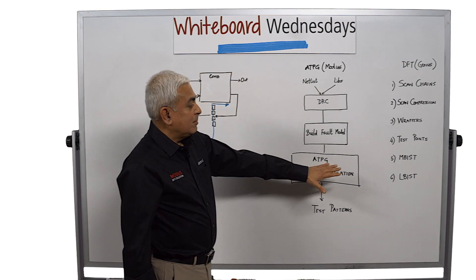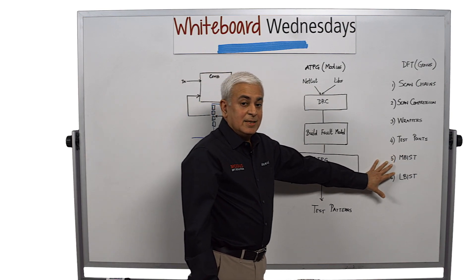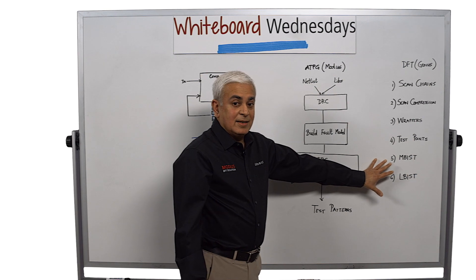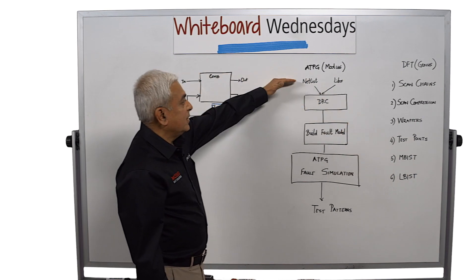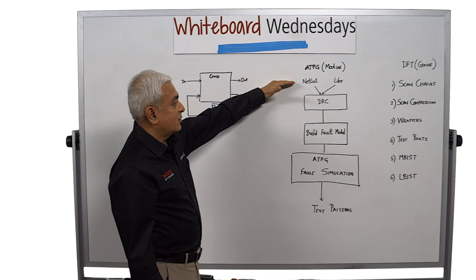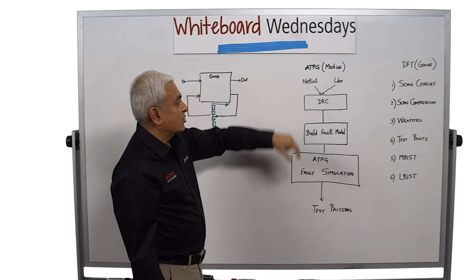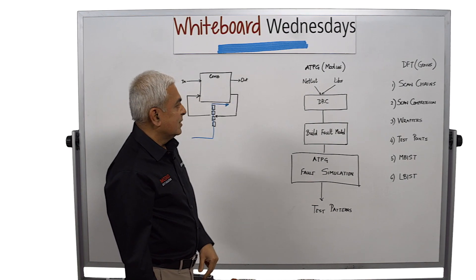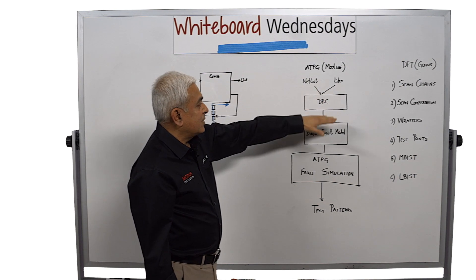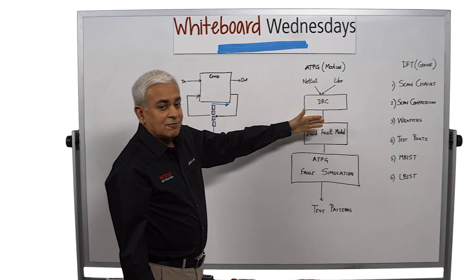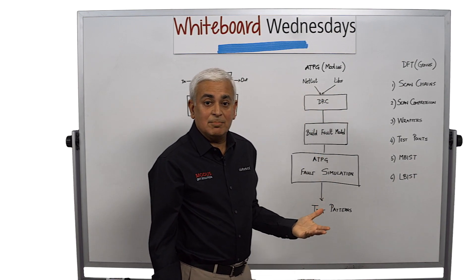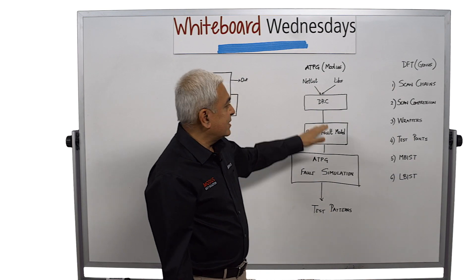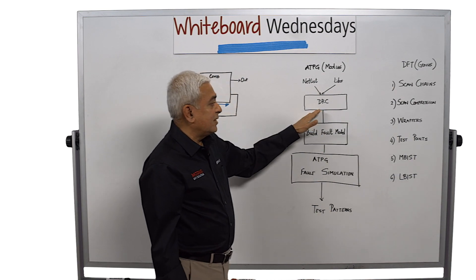Once you implement the DFT, we typically take the output netlist from DFT and put it into an ATPG software, which at Cadence is called MODIS. The netlist and libraries are read in. The first step is to make sure that the DFT is implemented correctly — that step is called design rule checking.